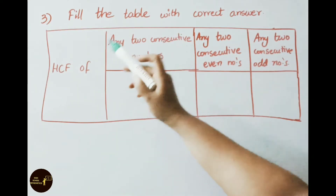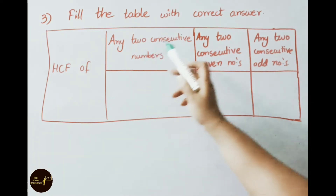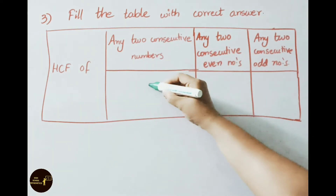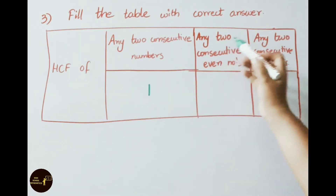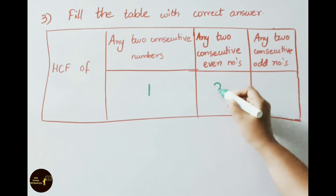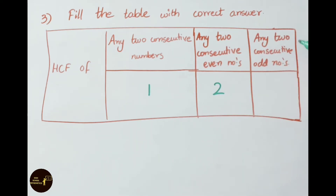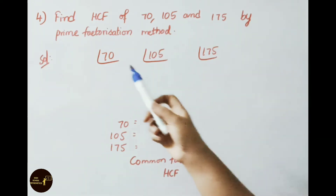See the third question: Fill the table with the correct answers. The HCF of any two consecutive numbers is 1. The HCF of any two consecutive even numbers is 2. The HCF of any two consecutive odd numbers is 1.